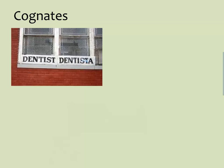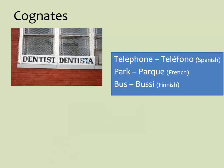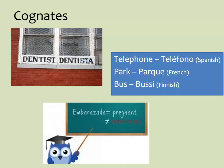Cognates are words that are similar in both languages and mean the same thing. 'Dentist' and 'dentista' are one example, as are 'telephone,' 'park,' and 'bus.' There are also false cognates — words that sound similar but mean very different things. For example, 'embarazada' in Spanish may look and sound like 'embarrassed,' but it actually means 'pregnant,' which might certainly embarrass you if you used it incorrectly.